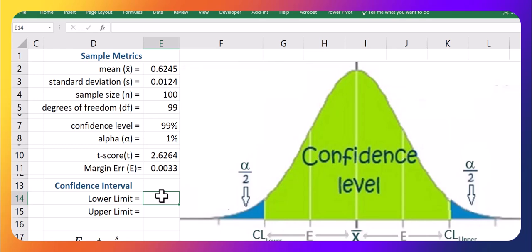So we take that margin of error and we subtract it from our sample mean for our lower bound. And we take and we add it to our sample mean for our upper bound.